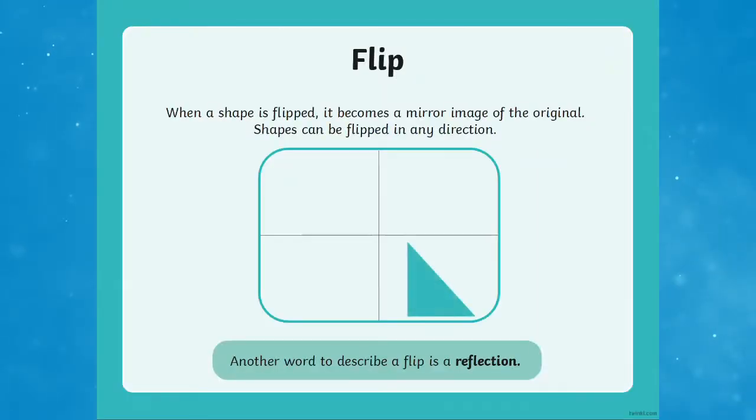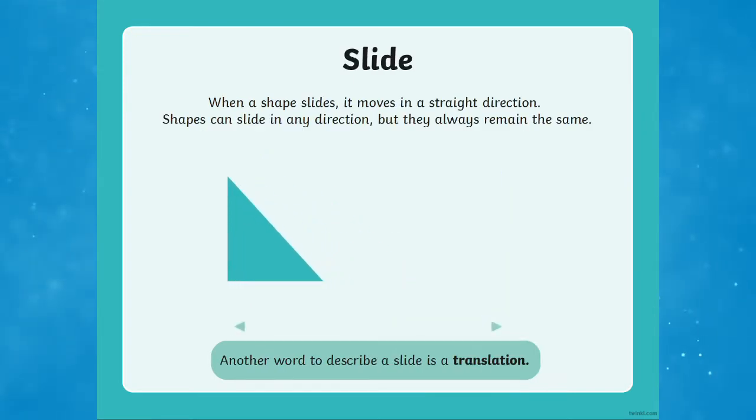So when a shape is flipped it becomes a mirror image of the original and shapes can be flipped in any direction. When a shape slides it can move in any straight direction. Those shapes that slide stay the same.